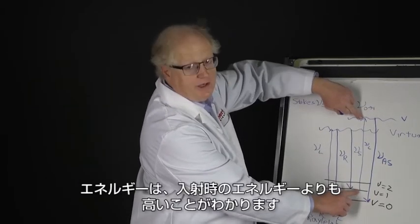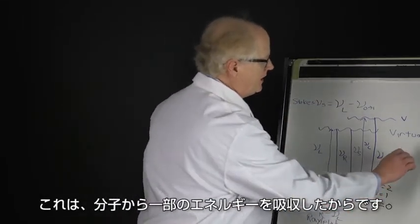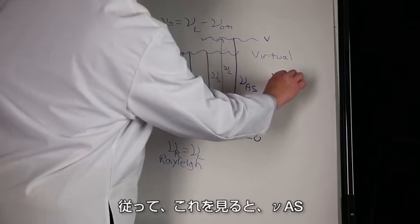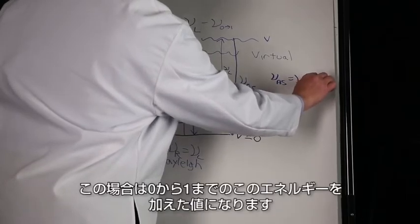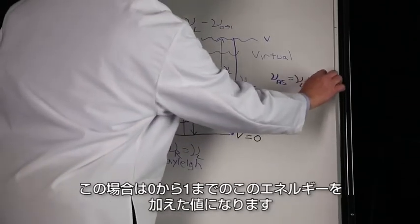Is higher in energy than the energy that came in because the molecule gave up some energy. So if we look here, we have the νAS, this energy is equal to νL in this case plus the energy zero to one.